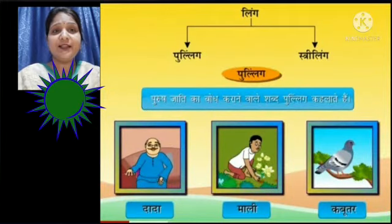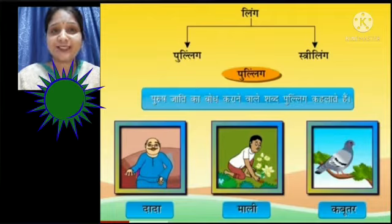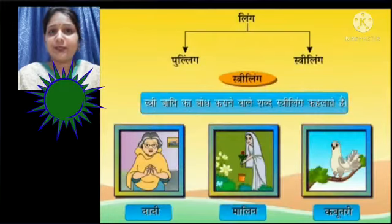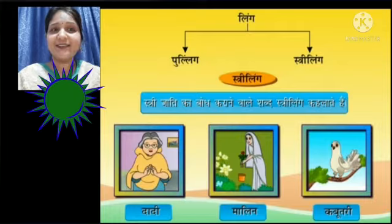Pulling - purush jati ka bodh karane waale shabd Pulling kehlate hain. Jaise dada, mali, kabutar - ye jo shabd likhe huye hain, in shabdon se hume pata chal raha hai ki ye purush jati ke shabd hain, to hum isse kya kehenge? Pulling. Doosara hai aapka Striling - stri jati ka bodh karane waale shabd Striling kehlate hain. Jaise dadi, malin, kabutari - in shabdon se hume pata chal raha hai ki ye stri jati ke shabd hain, to hum isse kya kehenge? Striling.